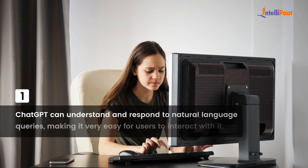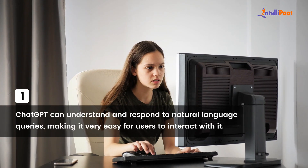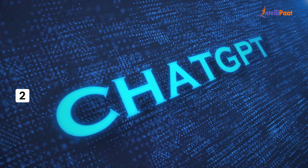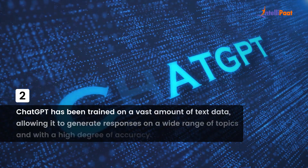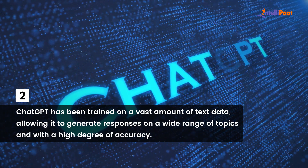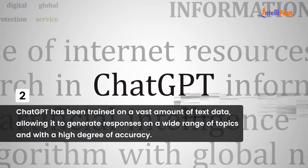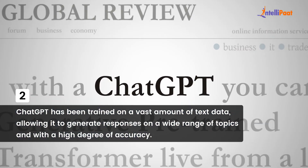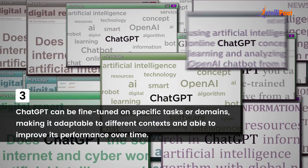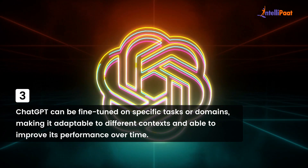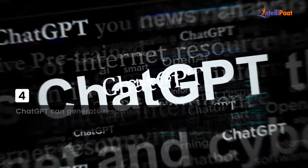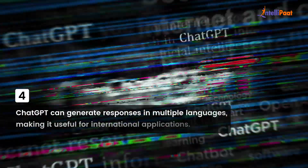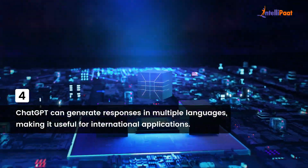Moving on to features of ChatGPT. ChatGPT can understand and respond to natural language queries, making it very easy for users to interact with it. Second, ChatGPT has been trained on a vast amount of text data, allowing it to generate responses on a wide range of topics with a high degree of accuracy. Third, ChatGPT can be fine-tuned on specific tasks or domains, making it adaptable to different contexts and able to improve its performance over time. Fourth, ChatGPT can generate responses in multiple languages, making it useful for international applications.